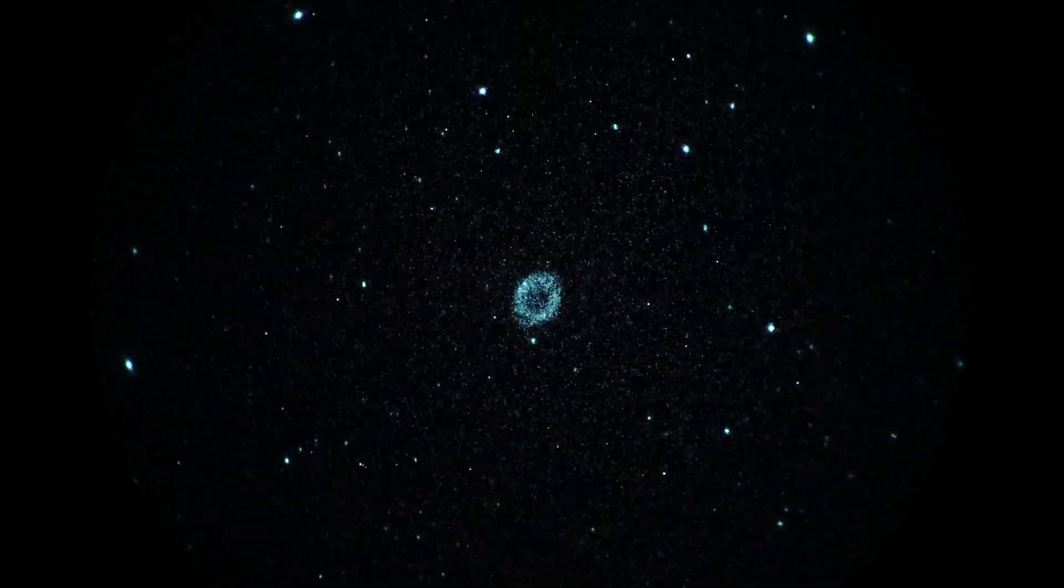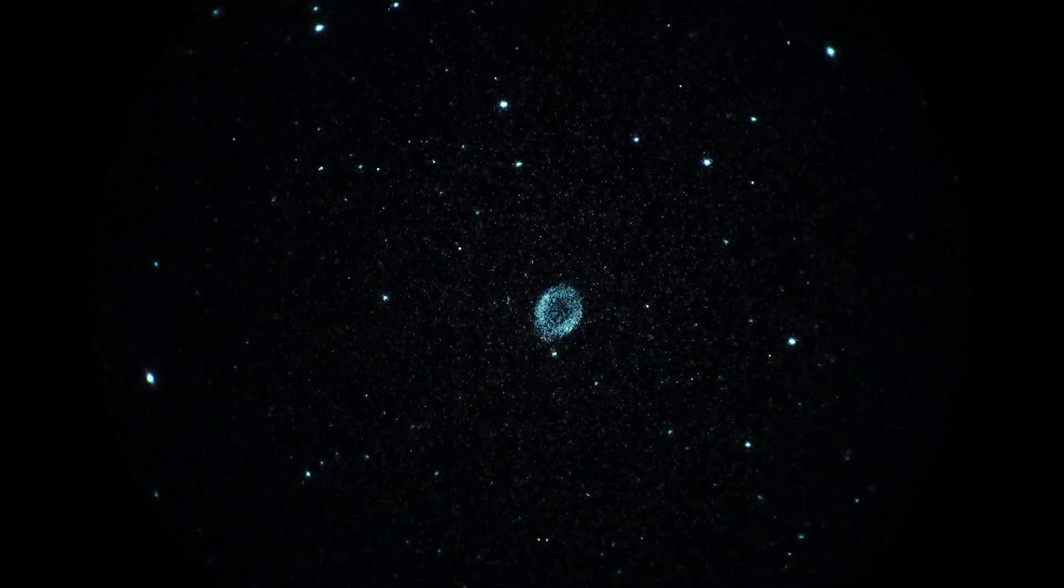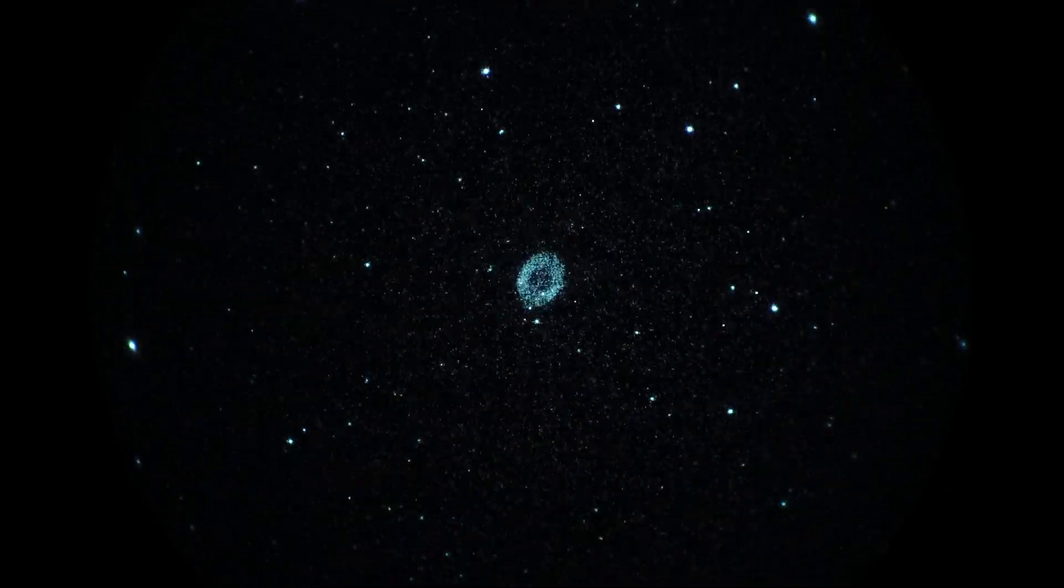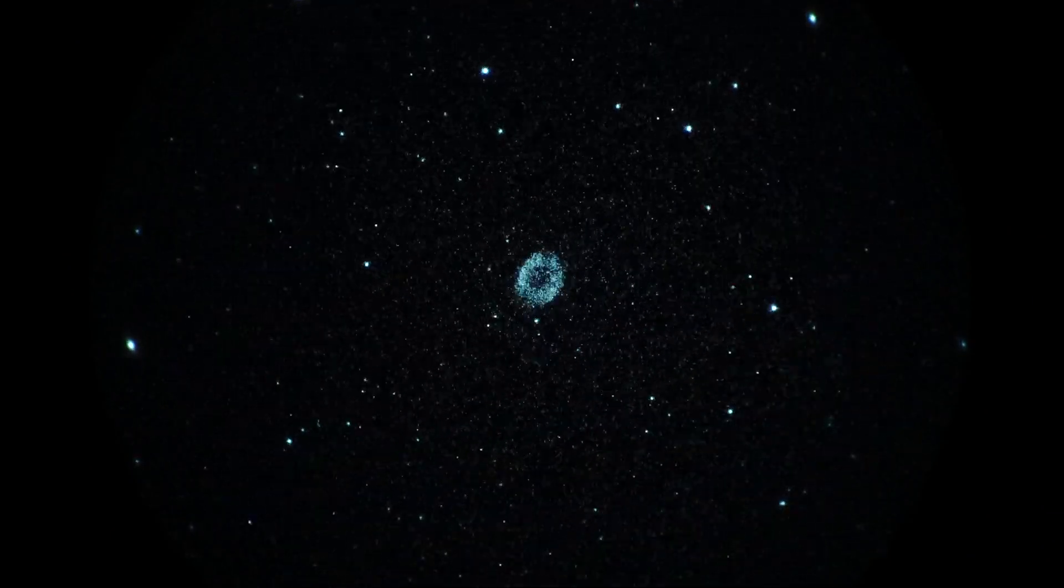You can see a definite donut shape to the ring. Pretty bright here in the white phosphor tube. It's about 60 degrees off the horizon, so it's up reasonably high.